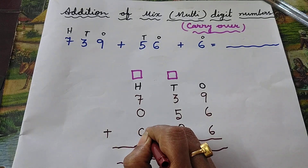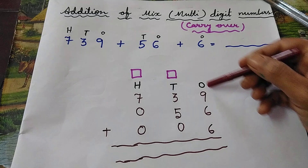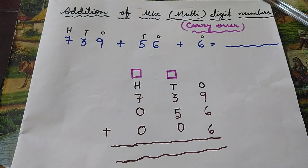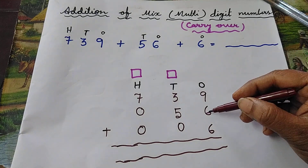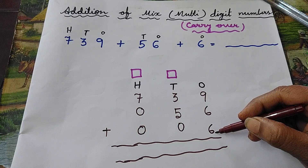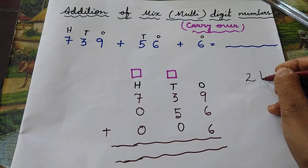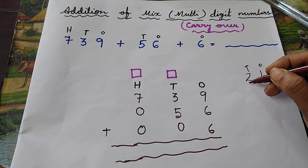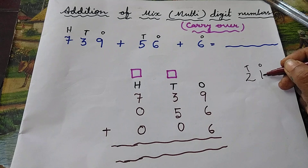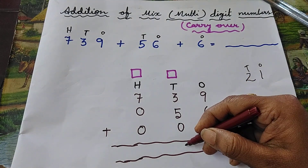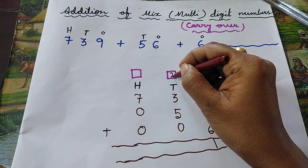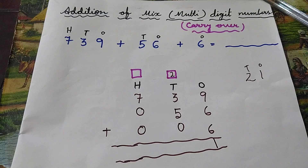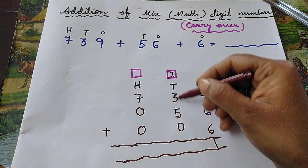Now start adding from the right side. Nine plus six plus six is equal to twenty-one. One belongs to ones place, two belongs to tens place — so write one in the ones column, and we will carry two to the tens house.